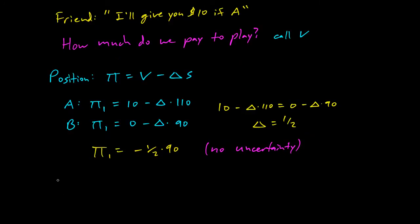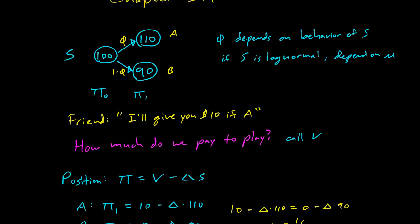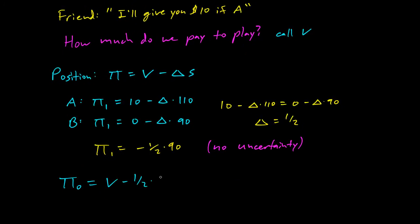And then pi_0 is just V minus delta times S, so pi_0, S is 100. So 100.